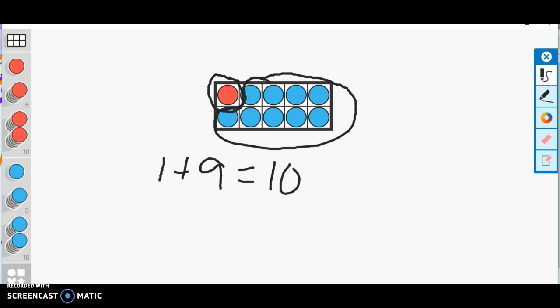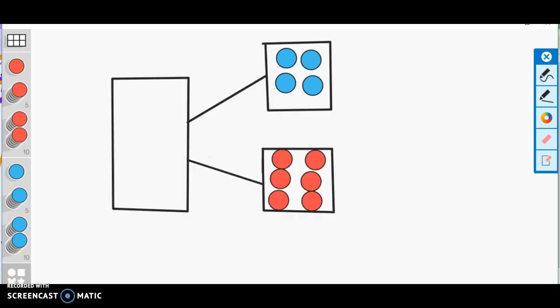This is a number bond. We use it to represent parts of a whole. So here is my whole and here are my parts.